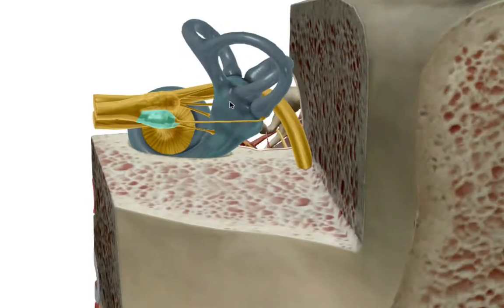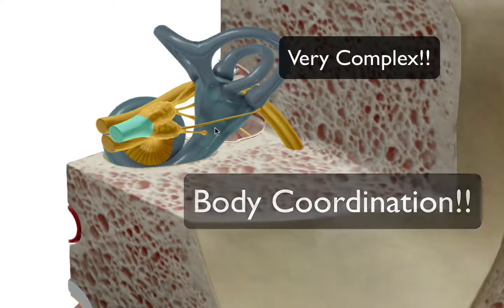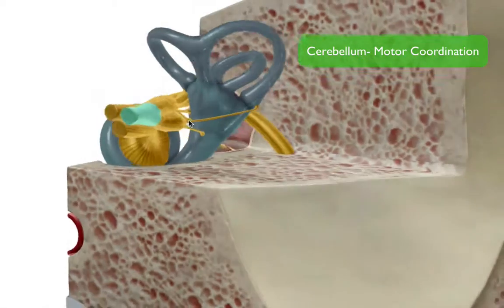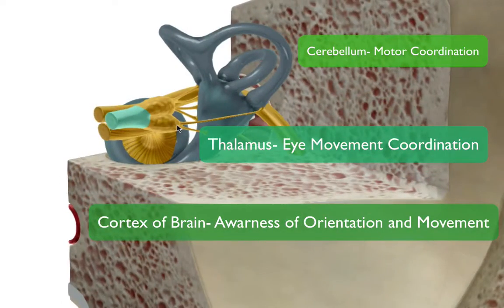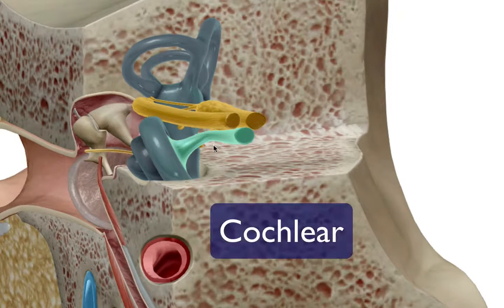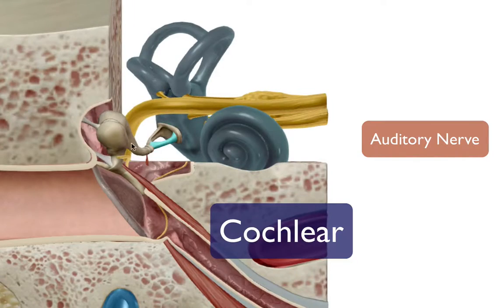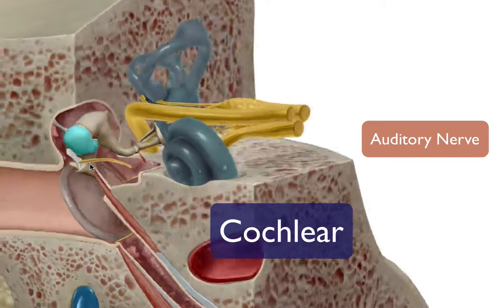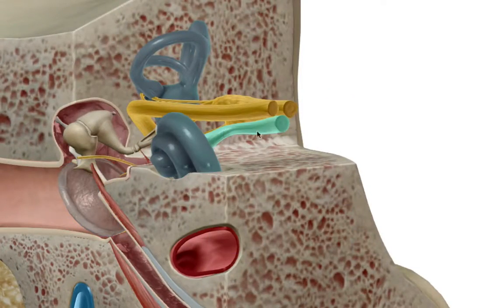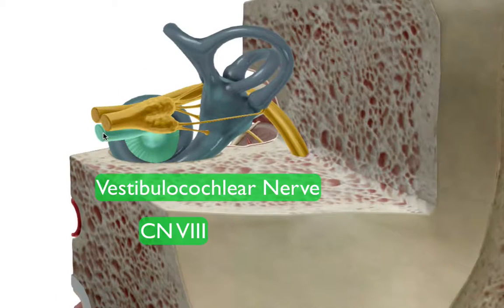Balance is quite a complicated process — various processing centers are involved including the cerebellum, thalamus, and cortex, along with eye movement coordination. The other branch, the cochlear branch, innervates the cochlea, the special organ dealing with hearing. Signals pass through the stapes, incus, malleus, and tympanic membrane into the cochlea, then get processed through the cochlear nerve. Together they form the vestibulocochlear nerve, cranial nerve number eight.